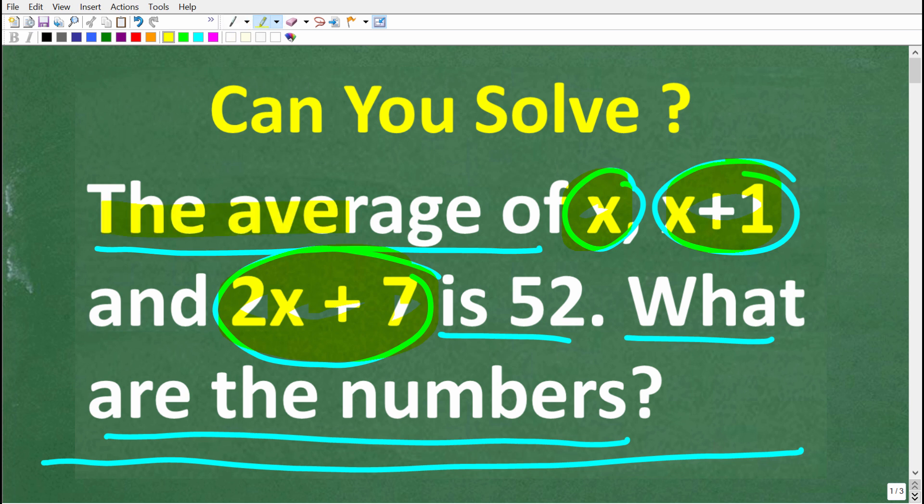All right, so one more time. The average of x, x plus 1, and 2x plus 7 is 52. What are these numbers? Okay, so let's go ahead and take a look at the correct solution right now.